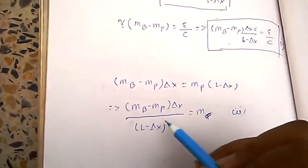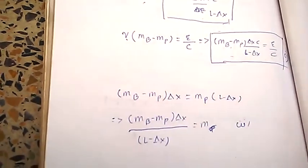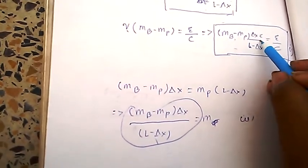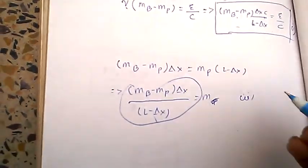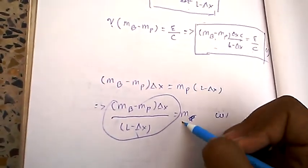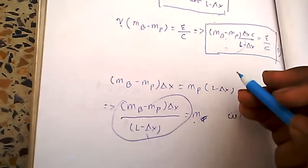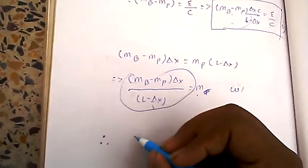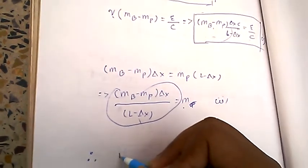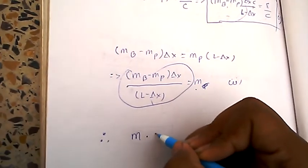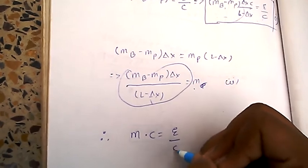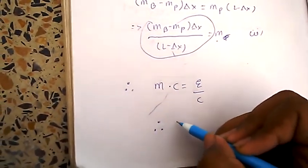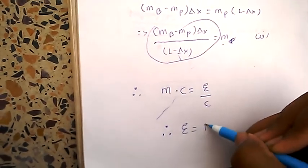Assume is equation 1. So, you can simply see that this equation fits in this equation except C. And then we'll put the value of M in place of this. So, we'll get M into C equals to E by C, which clearly gives E equals to MC squared. Thus, proved.